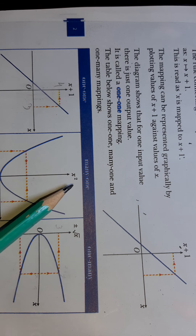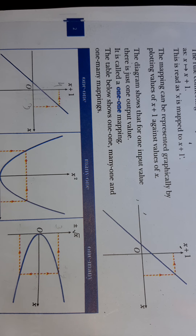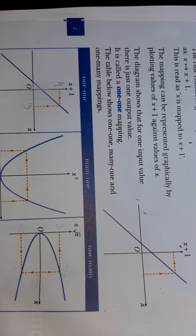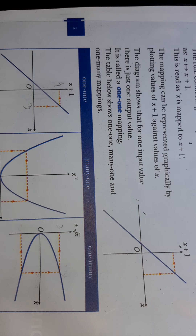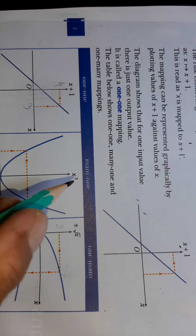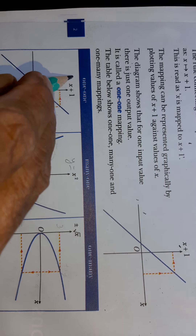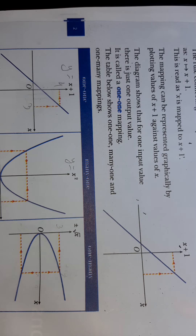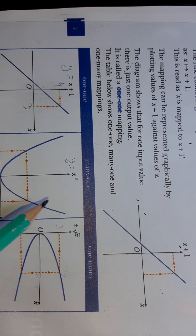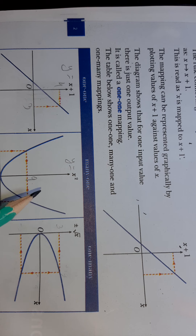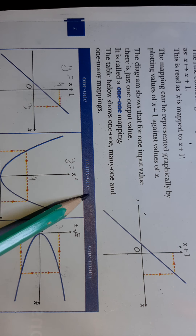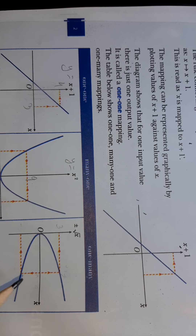Here this is many-to-one — that means for two input values there is only one output value. For example, with y = x², if we take x = +3 we get y = +9, and if we take x = −3 we also get y = +9. So for two input values there is one output value. This is called many-to-one.